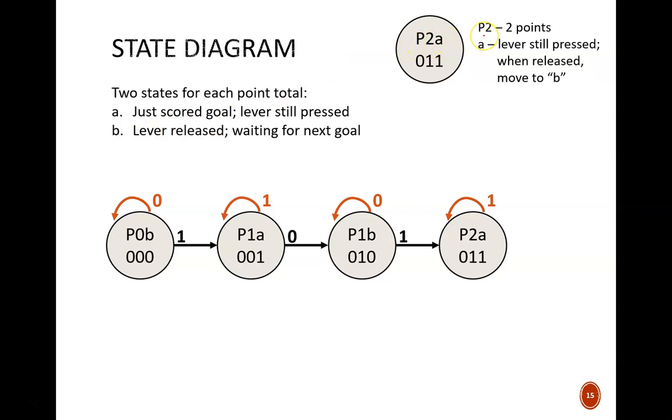This legend up top explains the notation I am using for the nodes. P2 means that two points have been scored. A means that we are in the first state where the lever is still pressed. This will change to B once the lever is released. This partial state diagram shows how this works. At the start of the game, the state should be P0B, meaning there are zero points scored, and we're waiting for the next goal.